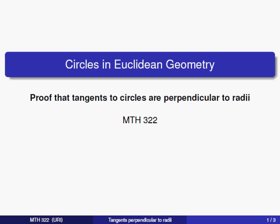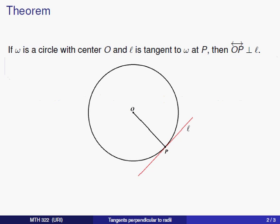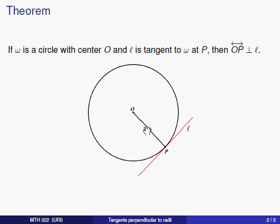Let's start the proof. To begin, we're going to state the theorem a bit more formally. We're going to prove that if omega is a circle with center O and L is a line that is tangent to omega at the point P, then the line passing through O and P is perpendicular to the line L.